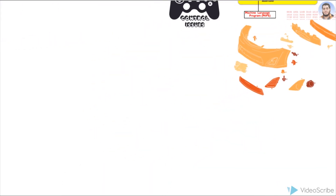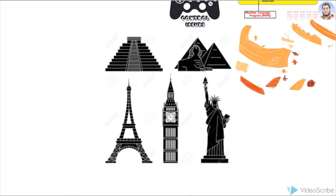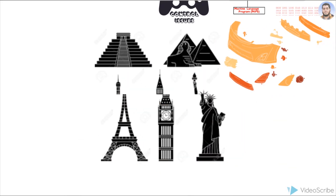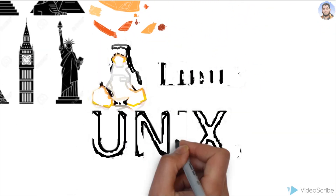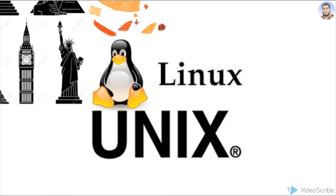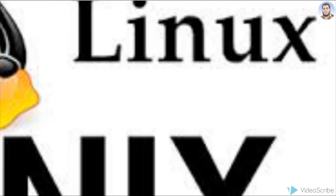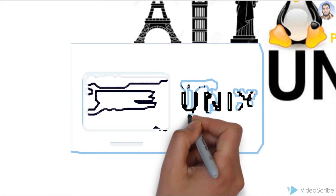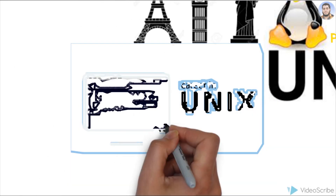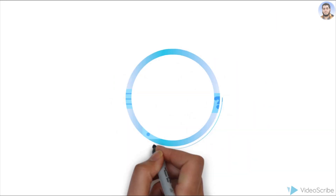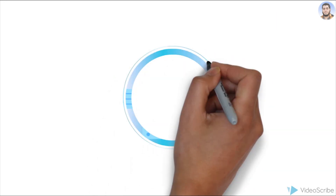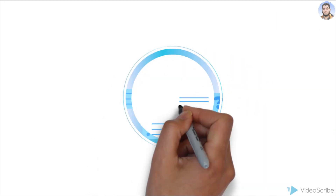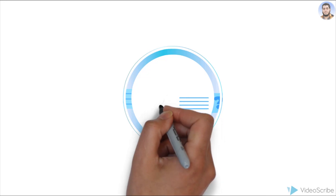You know the world-famous software which is coded in C — Unix and Linux. These system-based softwares are purely coded in C programming language. Unix and Linux are sometimes called the internet backbone as well.